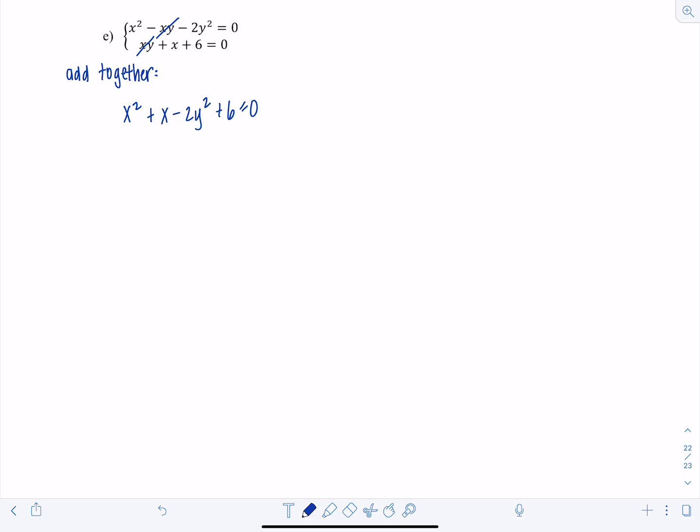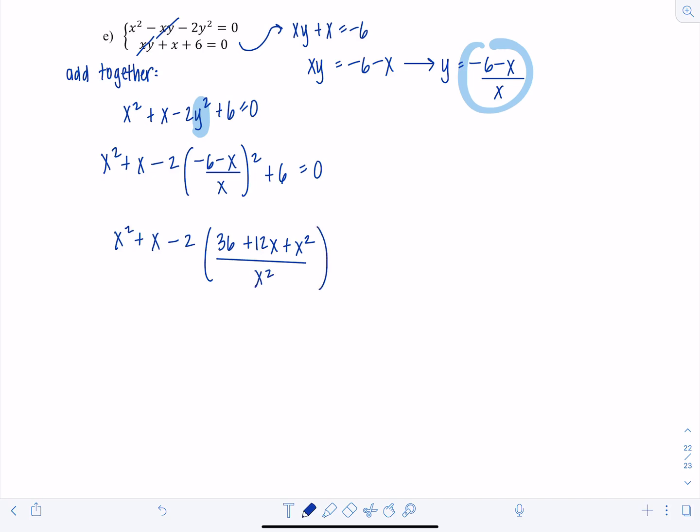So then maybe you go back to that second equation and you go, oh, well, maybe I can solve for one of the variables. So I know that xy plus x would be negative six, which means xy equals negative six minus x, which means that y equals negative six minus x over x. Maybe I'll just substitute this guy in for my y. Let's see what happens. We have x squared plus x minus 2 times negative six minus x over x squared plus six is zero. And then you're a brave math student. So you keep going. So you have x squared plus x minus 2 times, this is going to be 36 plus 12x plus x squared over x squared plus six is zero.